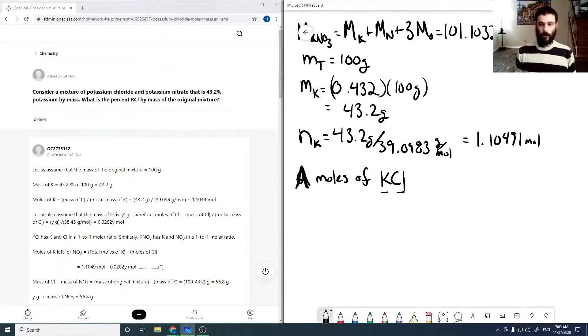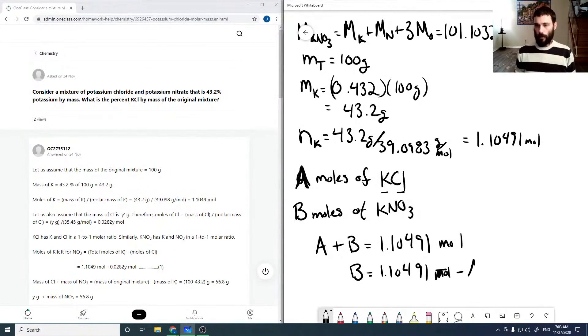Then that means, and if we assume we have B moles of KNO3, and again we have a one-to-one mixture, that means that A plus B must equal 1.10491, or B must equal 1.10491 moles minus A.